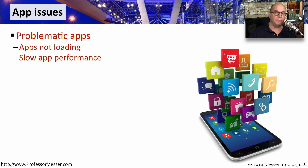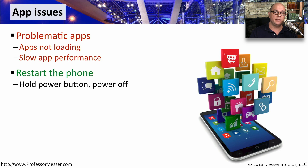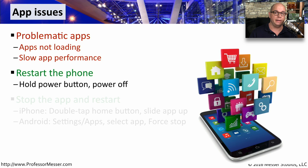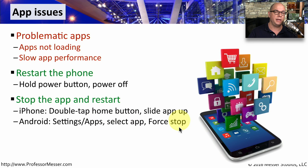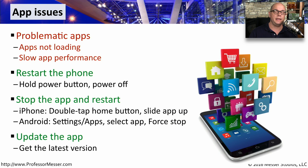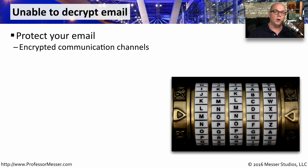Sometimes applications will have a problem — the app may not load, or once it does load it has very poor performance. In those cases, restart the phone by holding down the power button, powering it off, and then powering back on again. If the application is running with poor performance, you may need to administratively stop it. On an iPhone, double-tap the home button and slide the application up and out of memory. On Android, go to Settings and Apps, select the application, and choose Force Stop. If the application continues to have a problem, check if a newer version is available and install it onto your mobile device.